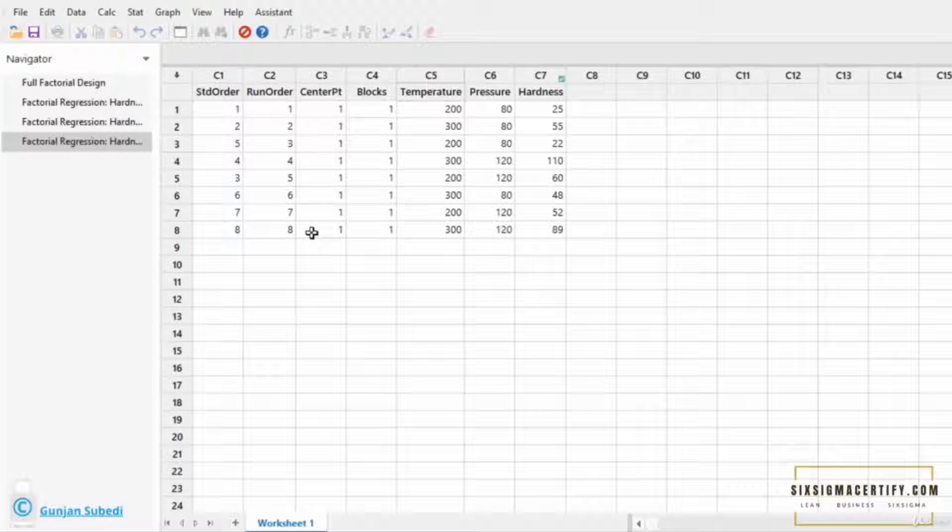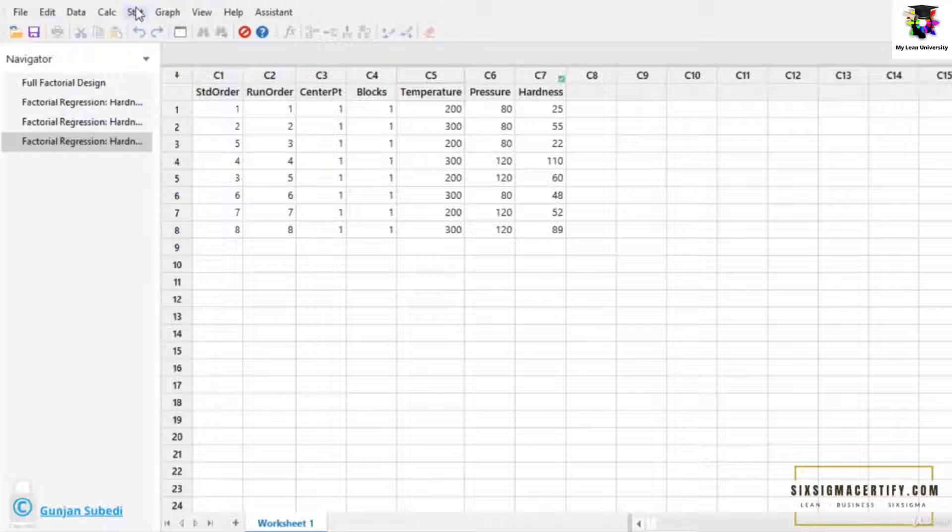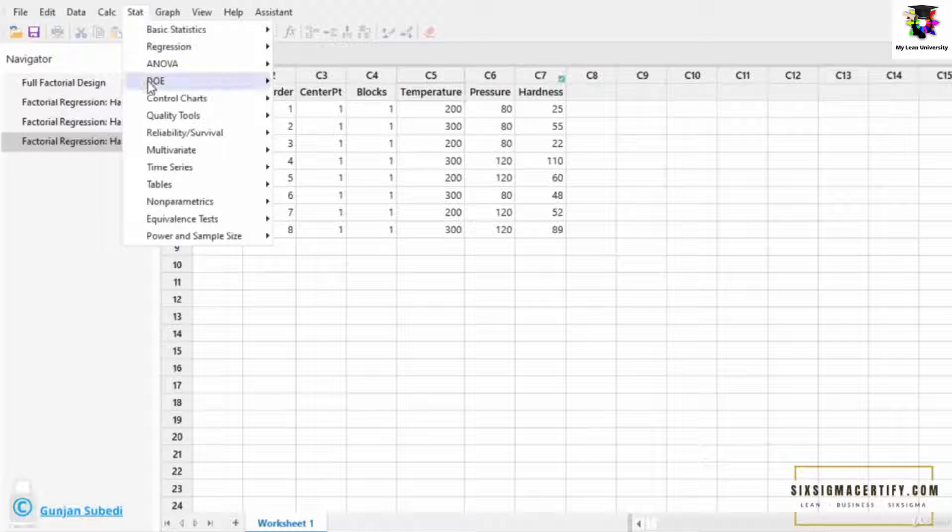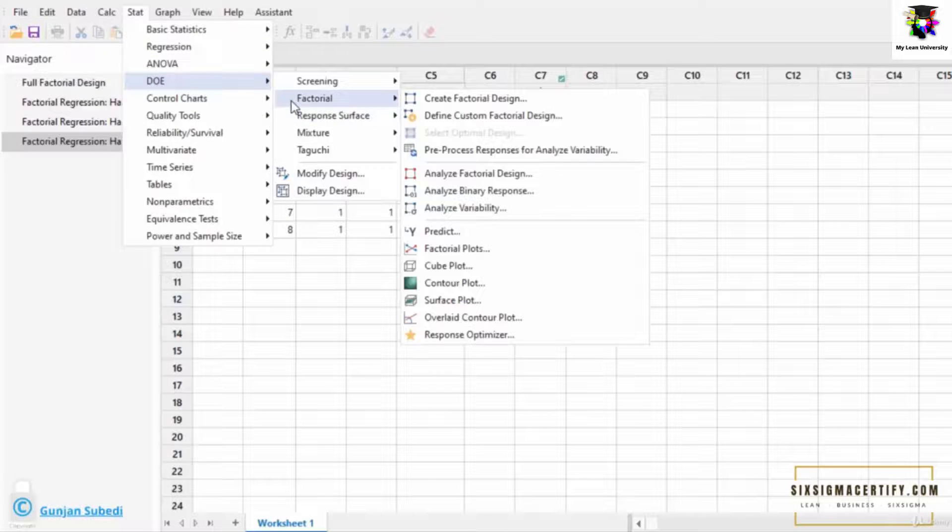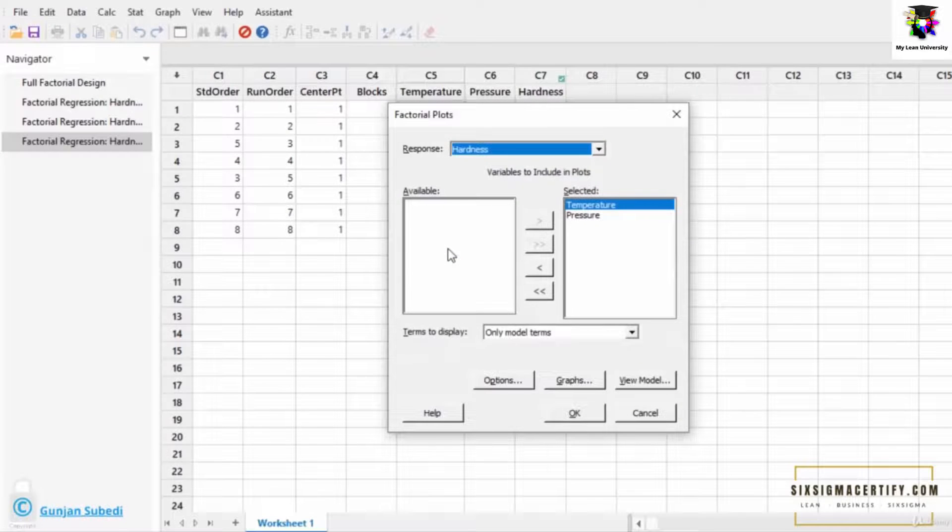In this lecture we will study about the main effects and the interaction plots. For that we go to Stat, we go to Design of Experiment, Factorial, and then you click on Factorial Plots.